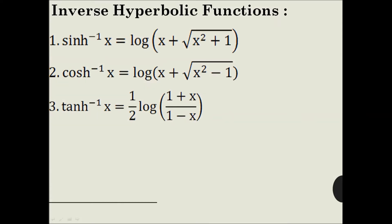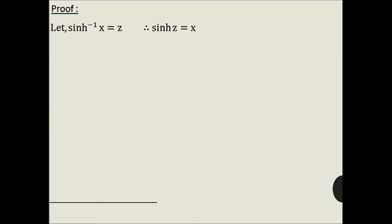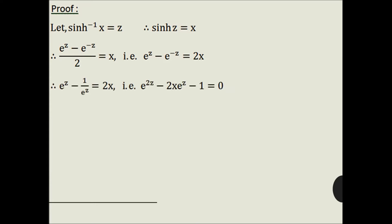Now let us move towards inverse hyperbolic functions. Here some results on inverse hyperbolic functions are given. Let inverse hyperbolic sin x = z. Therefore sinh z = x. Now using the definition of sinh z, we get (e^z − e^(−z)) / 2 = x, that is e^z − e^(−z) = 2x. Now put e^(−z) = 1/e^z and multiply the entire equation throughout by e^z.